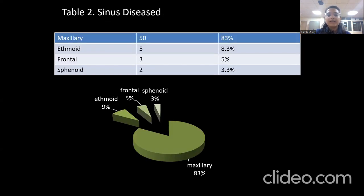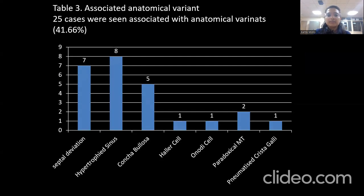This pie diagram shows sinus disease distribution. The most common sinus disease involves the maxillary sinus, seen in 50 cases, followed by the ethmoid sinus in 5 cases, frontal in 3 cases, and sphenoid in 2 cases. The bar diagram shows associated anatomical variance: 25 out of 60 cases were associated with anatomical variance, the most common being hypertrophic sinus, followed by septal deviation, concha bullosa, paradoxical middle turbinate, and pneumatized crista galli.